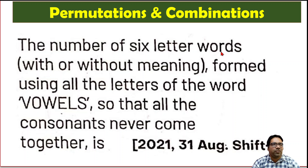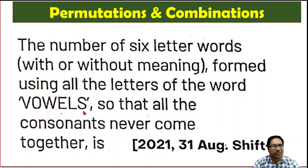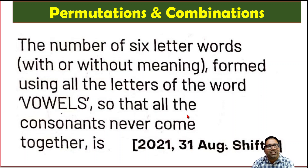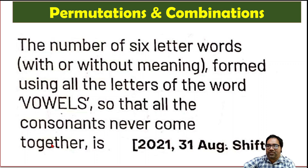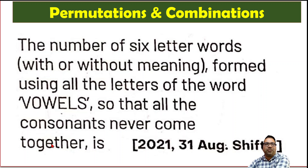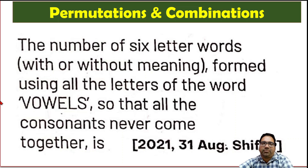Find the number of six-letter words formed using the letters of the word VOWELS (V-O-W-E-L-S). There are six letters and all six letters are different, such that all the consonants never come together. The consonants should not come together. There are four consonants — except O and E, the remaining letters are consonants.